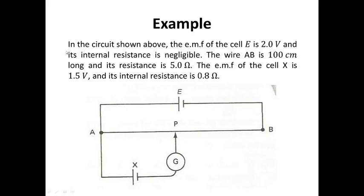Here we have an example. In the circuit shown above, the EMF of the cell E is 2V, and the internal resistance is negligible — so there's no internal resistance here. The wire AB is 100 cm long, and its resistance is 5 ohm. So wire AB is 5 ohm and 100 cm.